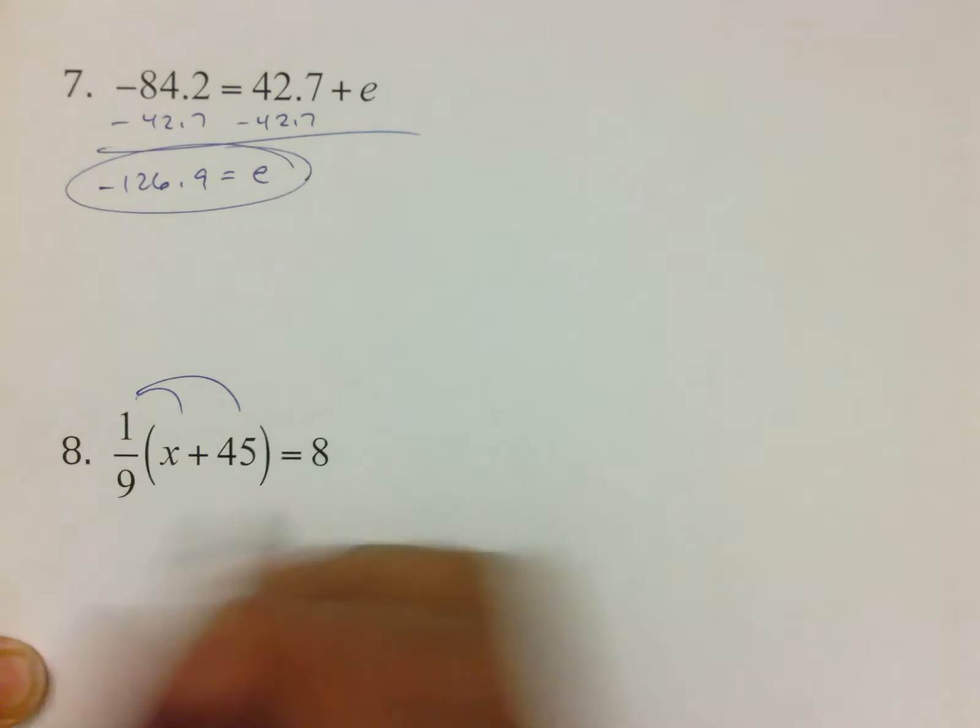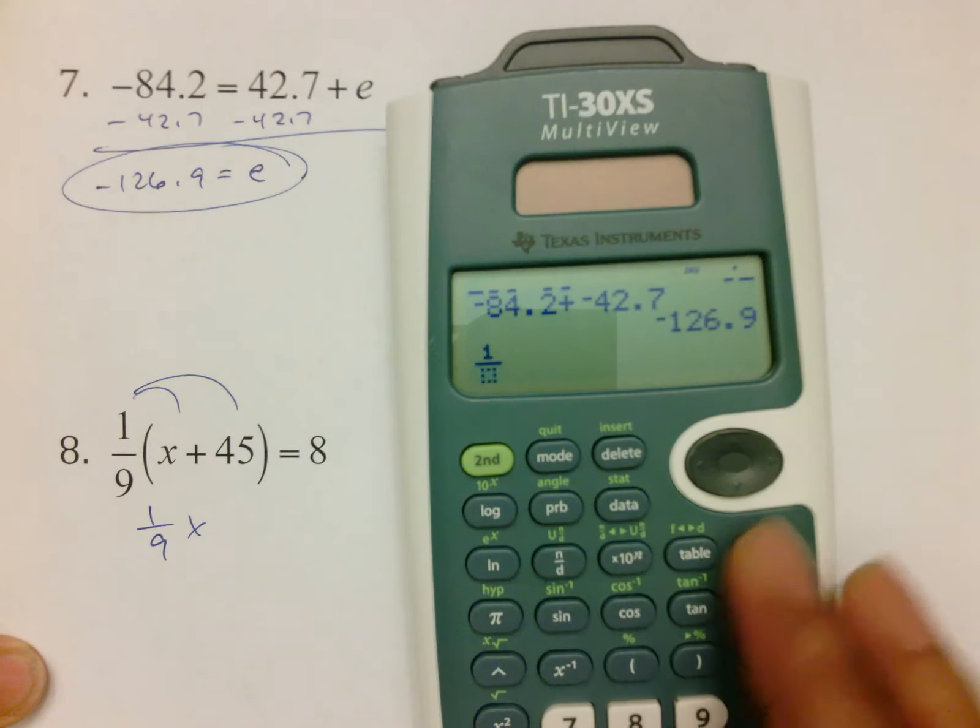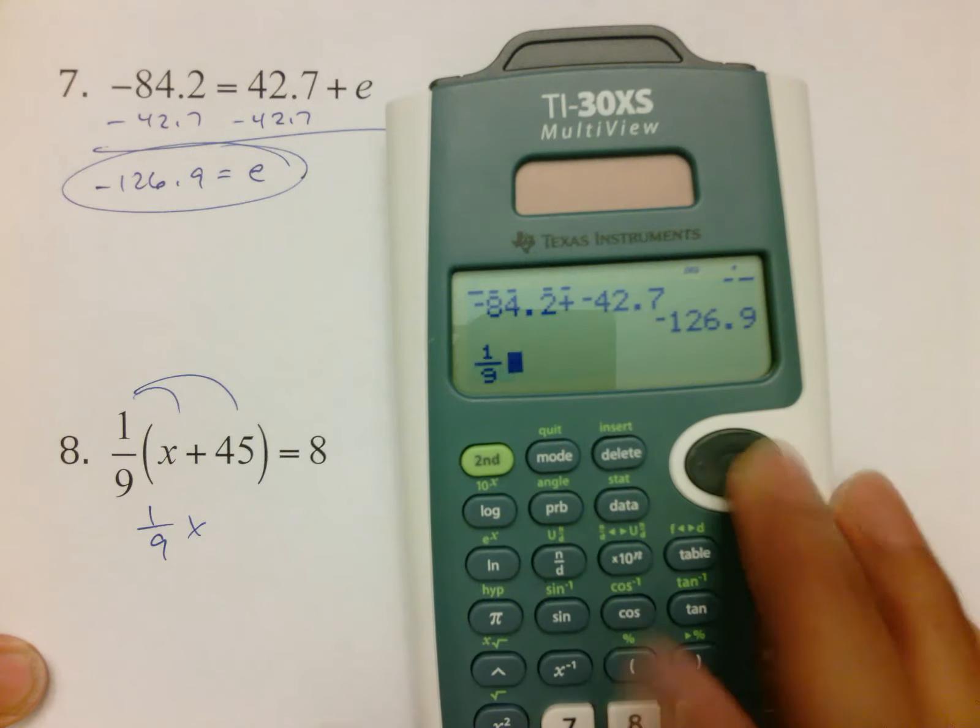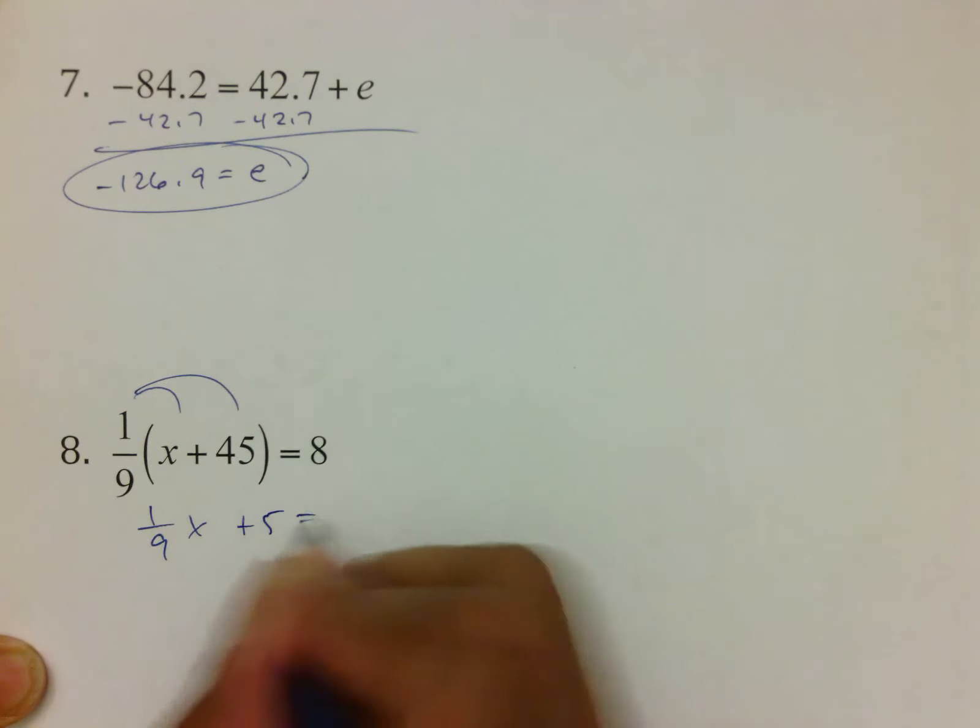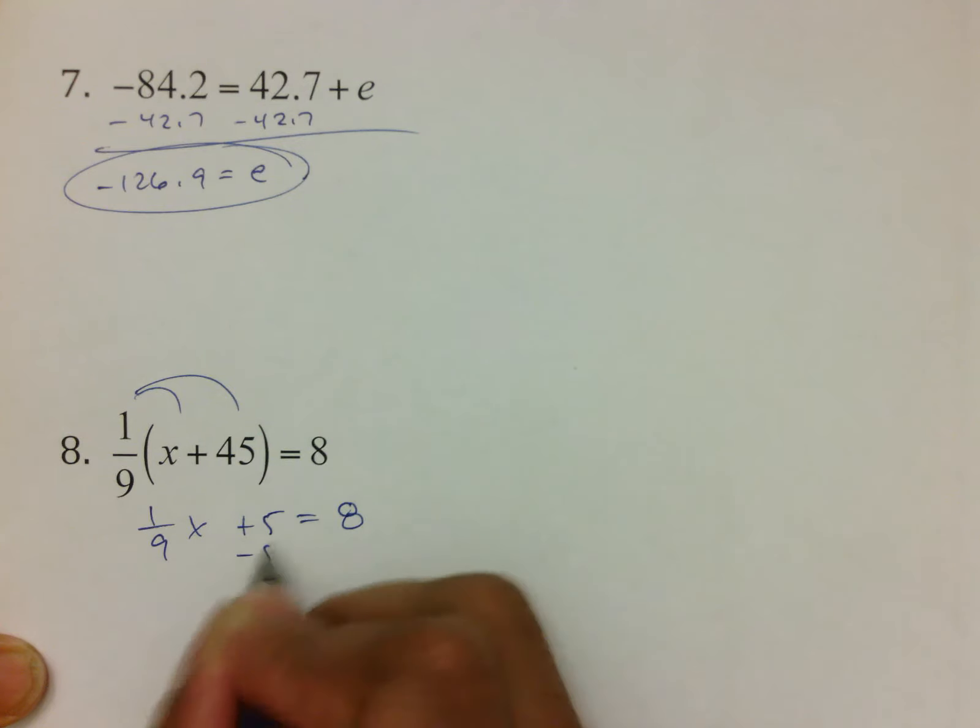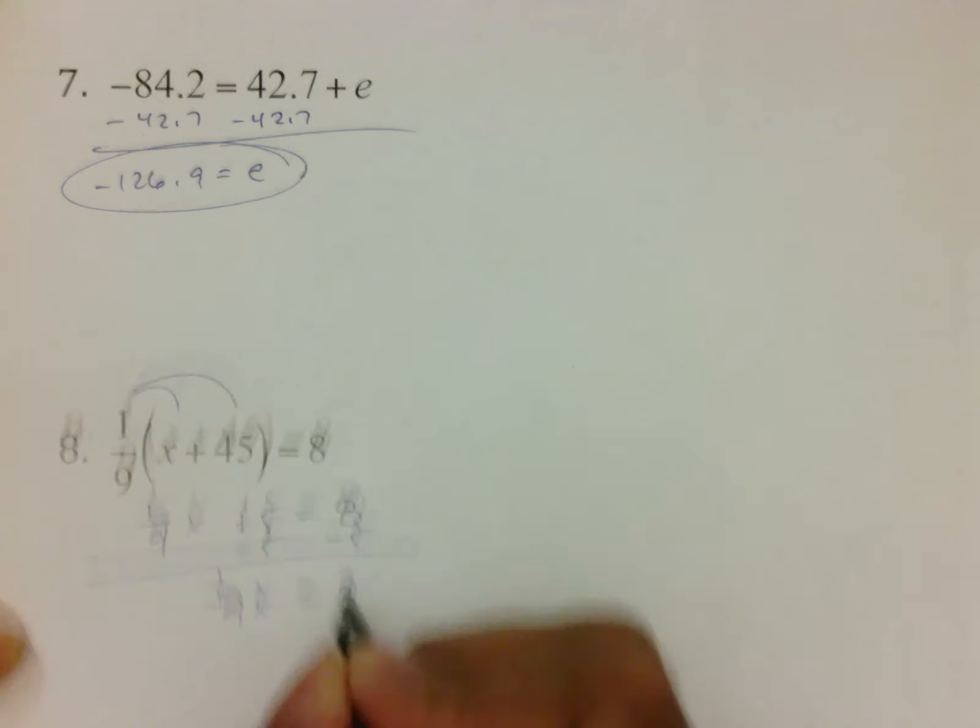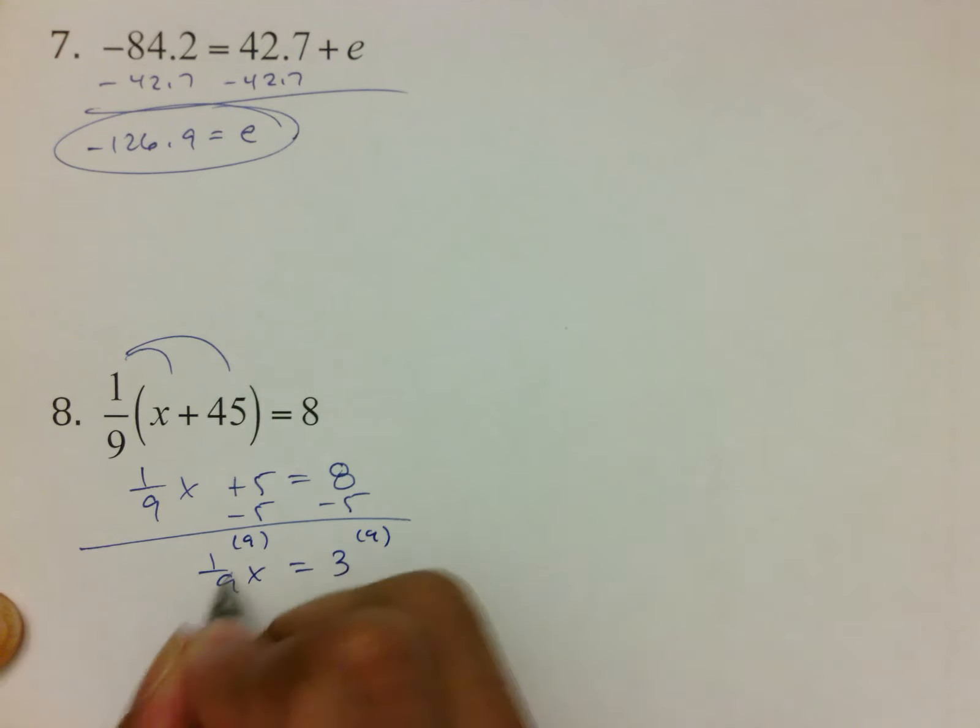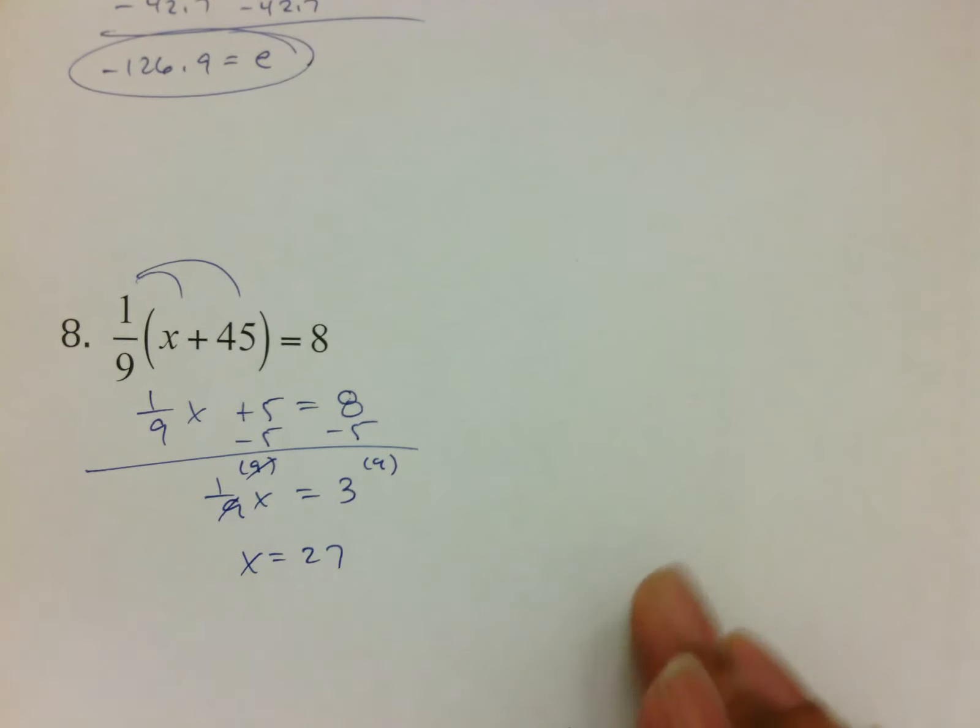Here you've got to distribute your fraction. Yes, it ends up as 1 9th x, but 1 9th times 45. Keep in mind, you've got to do the 1 9th as a fraction, then arrow out times 45 to get the answer of 5. Some of you like to multiply to get rid of the fraction, but you really don't need to. Bring down your 1 9th x equal to 3. And then from there, you can multiply both sides by 9, bringing down x equals 27.